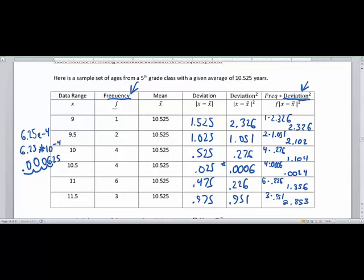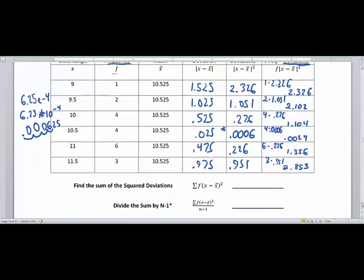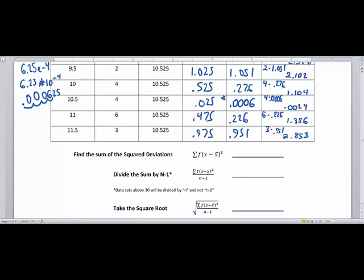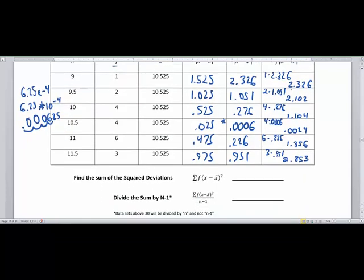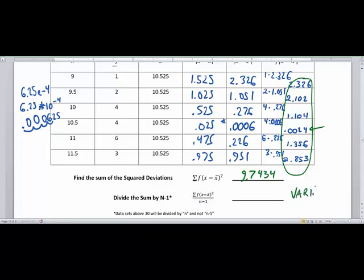Thanks for sticking with it because now we are going to add up the sum of those squared deviations. Everything in this column, all these green numbers need to get added together. I've got 9 point something, and then we will divide the sums by n minus 1 which gives us our variation of point 5 1 3.